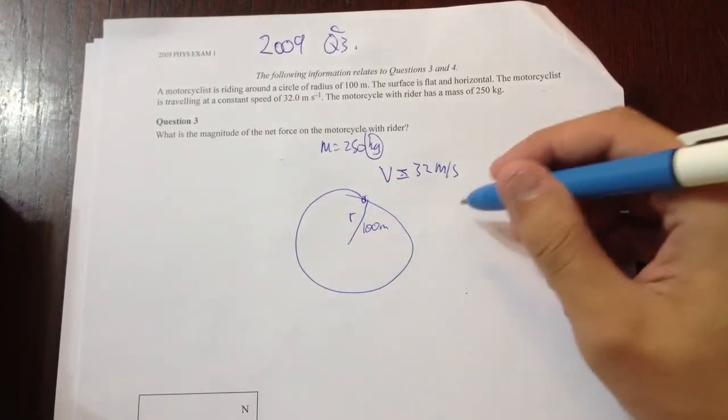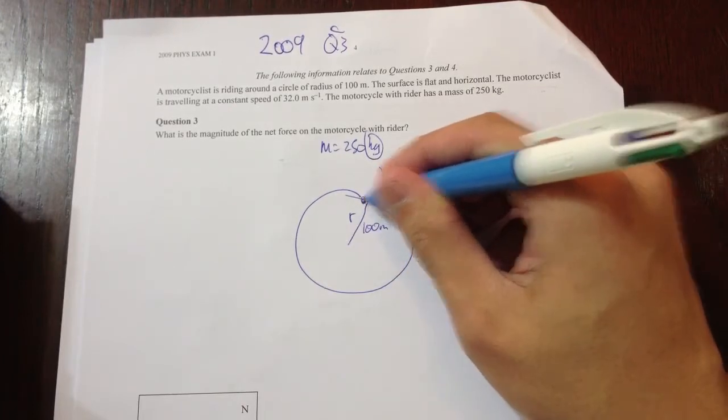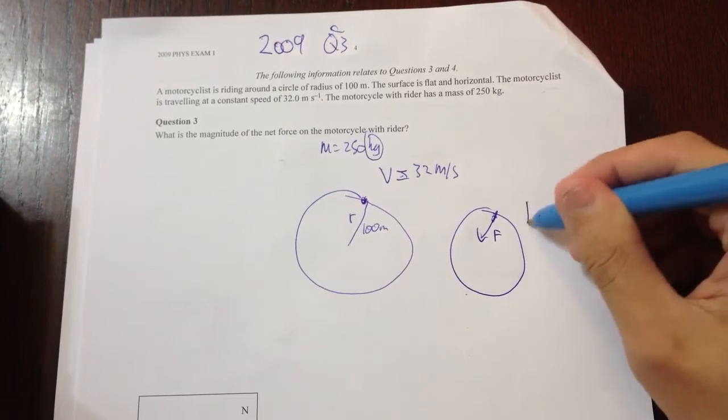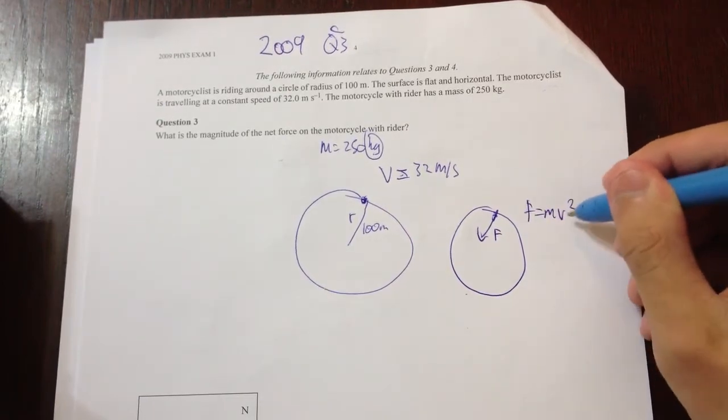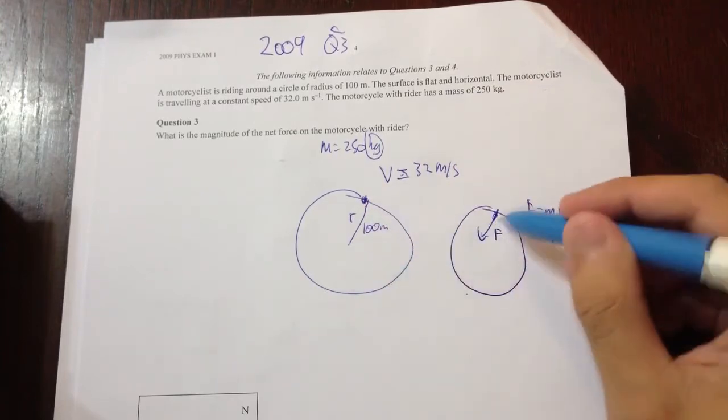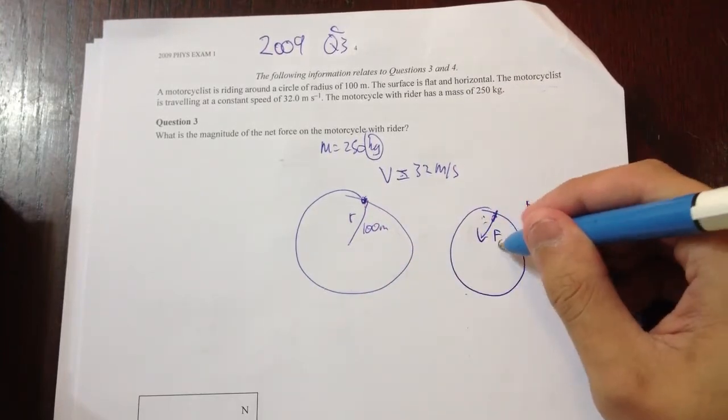Well, it's a circular motion question. So the force... We know if it's going in a circle, there's always a force going inwards. And that force equals mv squared on R. And we have all the situations here. We're just trying to find the net force. This is the net force. This force is the net force.